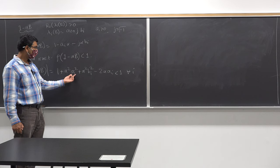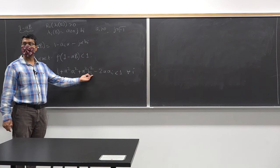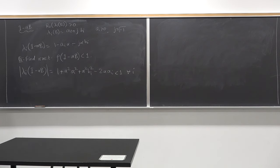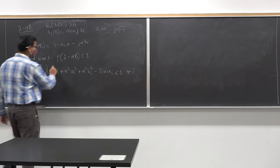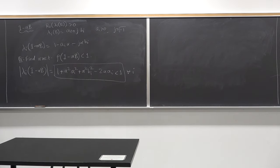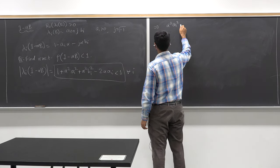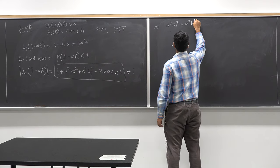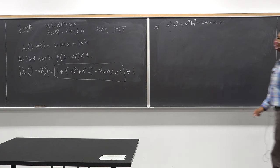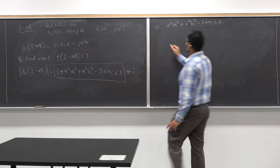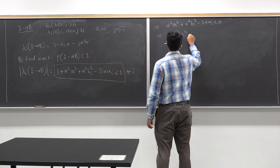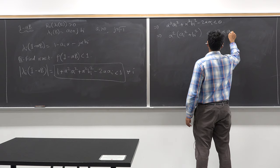This term cannot be zero because alpha is positive, A_i is positive, and B_i could be positive or negative. So let's look at this particular inequality and do some reverse engineering. I'm going to assume there is an alpha that satisfies this and find the range of alpha. From one plus something less than one, we get alpha squared times (A_i squared plus B_i squared) is less than two*alpha*A_i.